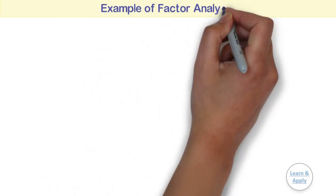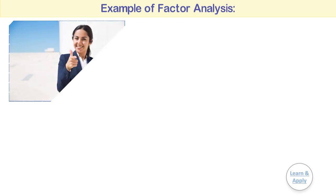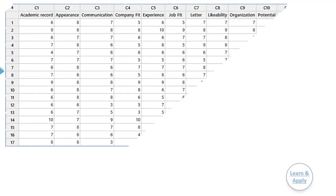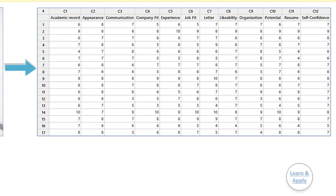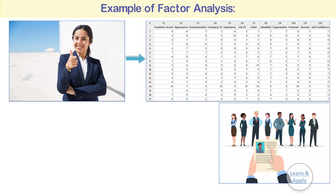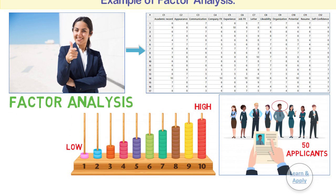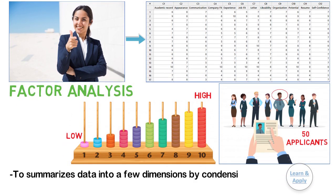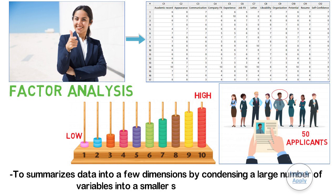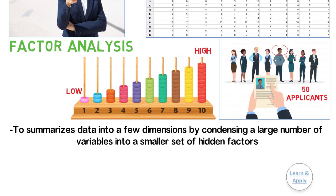Example of factor analysis. A human resource manager wants to identify the underlying factors that explain the 12 variables that the human resource department measures for each applicant. Human resource employees rate each job applicant on various characteristics using a scale of 1 as low through 10 as high. The manager collects the ratings for 50 job applicants. The human resource manager performs a factor analysis to summarize this data into a few dimensions by considering a large number of variables into a smaller set of hidden factors that may be easier to interpret.